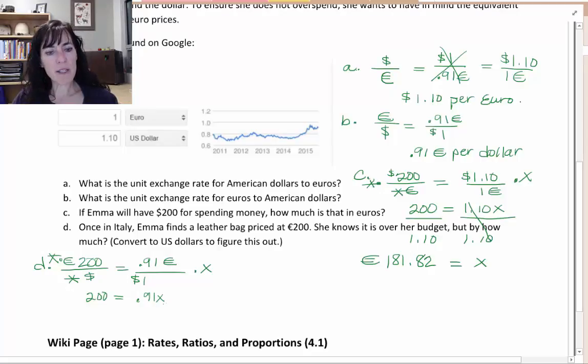Remember I want the x by itself. So I'm going to divide both sides by point nine one, because point nine one is being multiplied by the x right here. And I want to get it by - I want the x all by itself. So I need to strip off that point nine one by using an opposite operation.